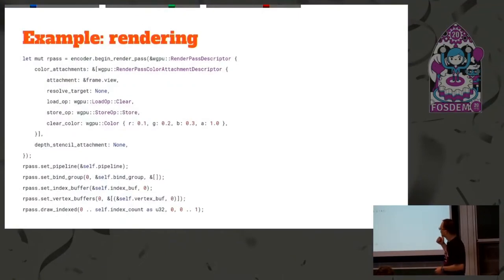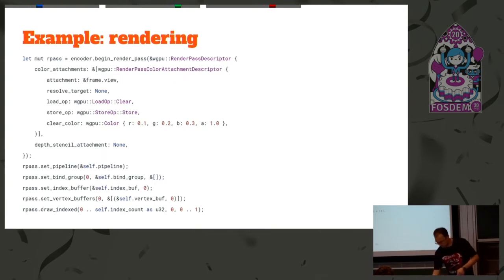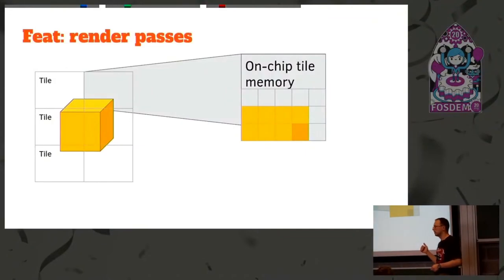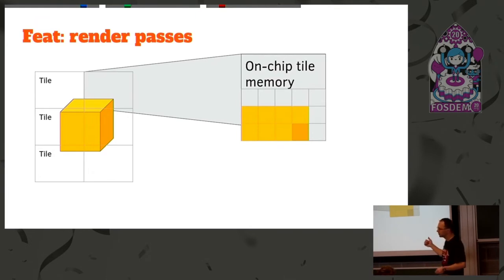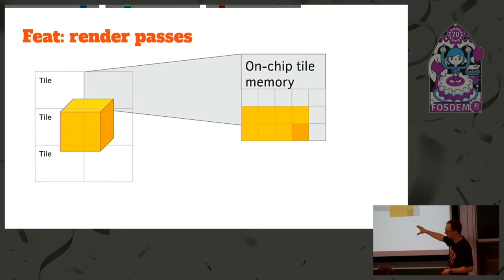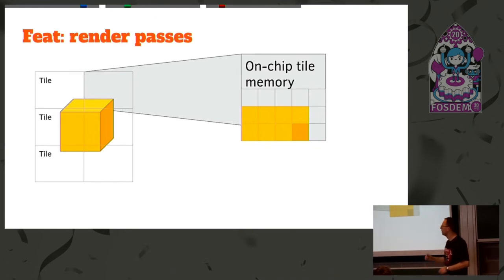Rendering has render passes, which means you don't just bind a target and draw. Render passes are needed because mobile devices have fast on-chip memory and don't want to work with the whole screen at once. Loading pixels into this fast on-chip memory is heavy and slow; processing them is cheaper. Typically the GPU goes tile by tile, loads all the pixels on the target, runs your shaders on it, and stores them back. So you can control the load and store operations — you can say 'don't load anything for me, just clear to this color,' saving a lot of memory bandwidth.